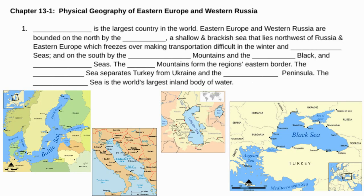We're going to begin with Russia. It is the largest country in the world. Eastern Europe and Western Russia are bounded on the north by the Baltic Sea, which is a shallow brackish sea that lies northwest of Russia and Eastern Europe. During the winter, it freezes over, making transportation difficult.